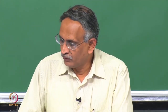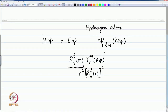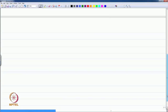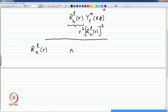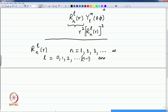We have not talked about the solutions in detail earlier, other than briefly mentioning that the radial functions have quantum numbers n and l, with the range: n equals 1, 2, 3, up to infinity, and l equals 0, 1, 2, up to n minus 1 for any given n.